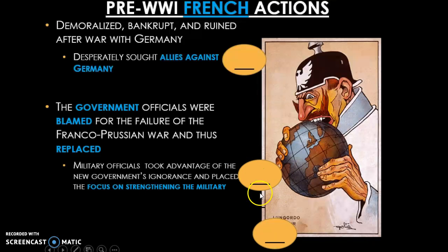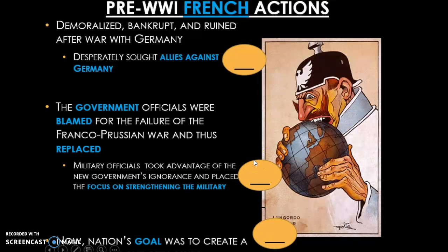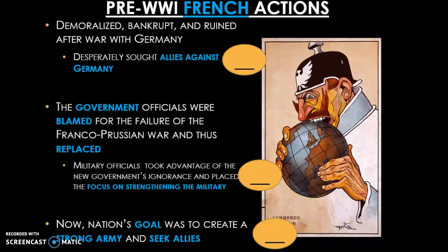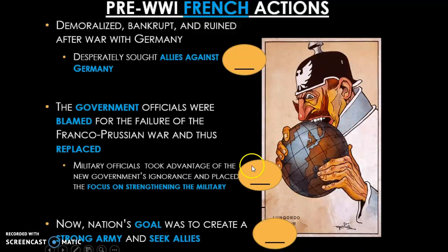Go ahead and annotate which of the main background causes France is practicing — place either an M, A, I, or N in the circle. The nation's goal was to create a strong army and seek alliances. You should have placed an M for militarism and an A for alliances. So we can see that before World War I has even started, France is focusing a lot on militarism and France is focusing a lot on alliances.